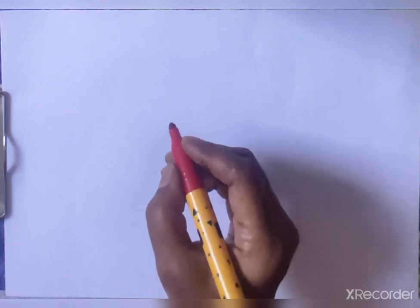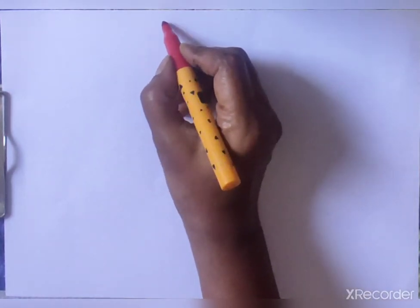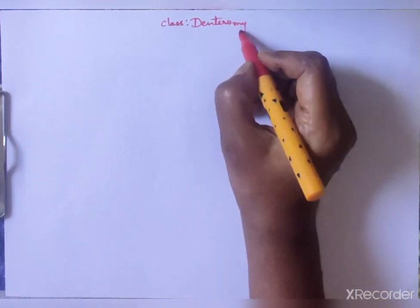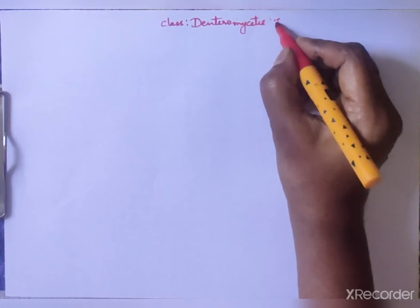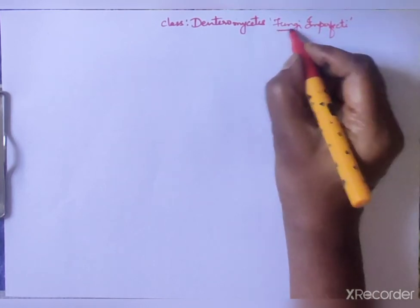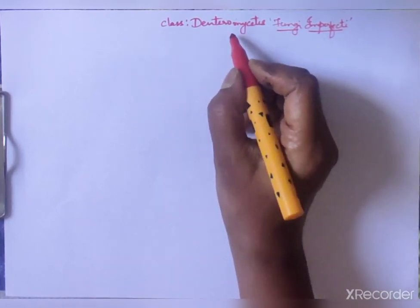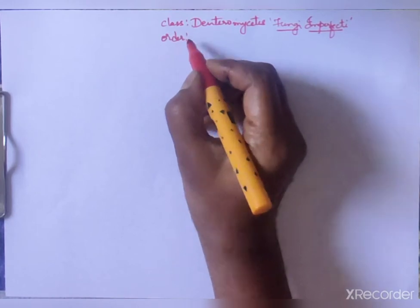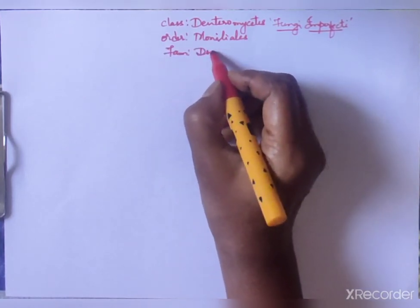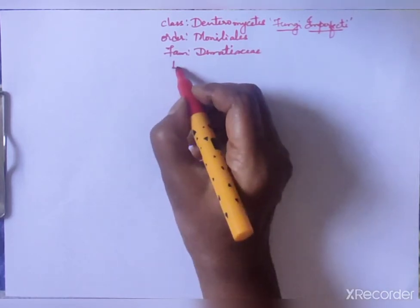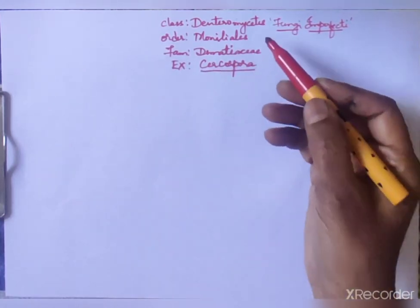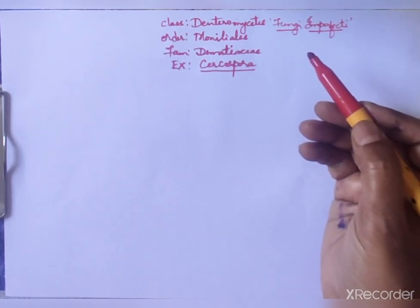Today we shall study the life cycle of Cercospora. Cercospora belongs to the class Deuteromycetes, which is also called Fungi Imperfecti. It is the last class of fungi, called Fungi Imperfecti because sexual reproduction is not seen in all its members. Order: Moniliales; Family: Dematiaceae; Example: Cercospora.